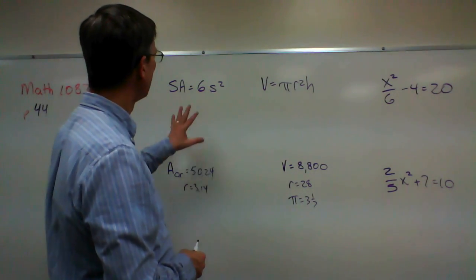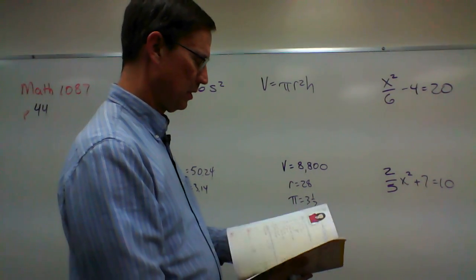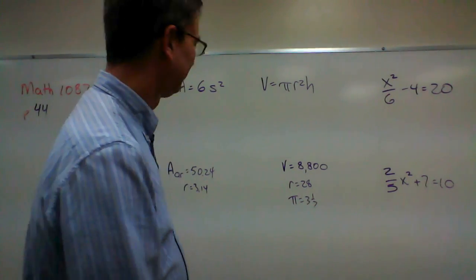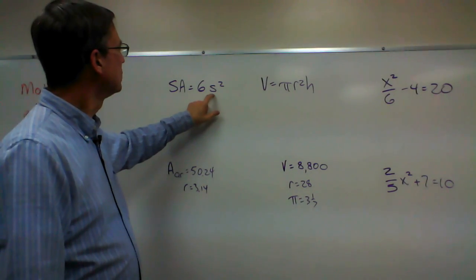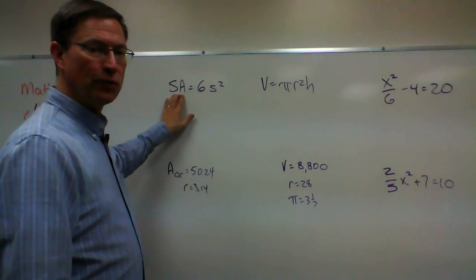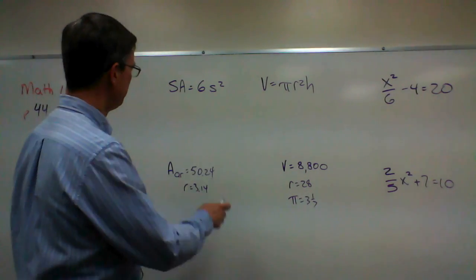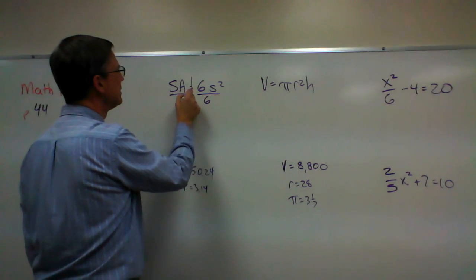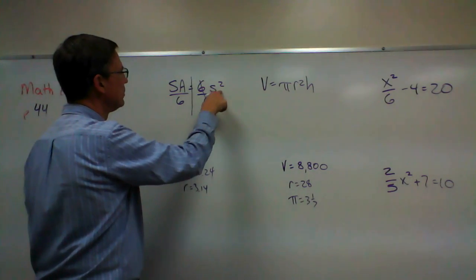So we're going to take this — page 44, okay. I want to solve for S. SA means surface area — it's not two different things, it's all put together: surface area, one thing. So to solve for S, the first thing I need to do is divide by six. So I have SA — surface area — divided by six, equals S squared.